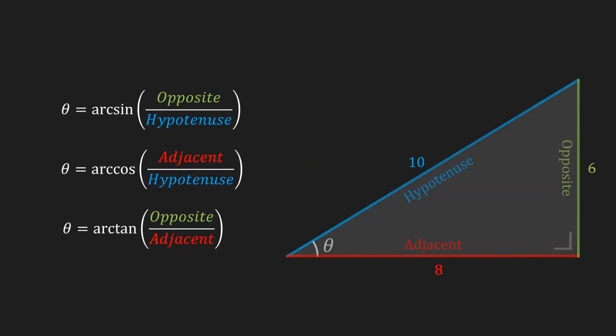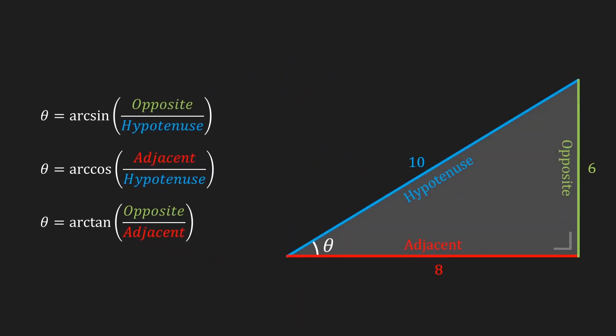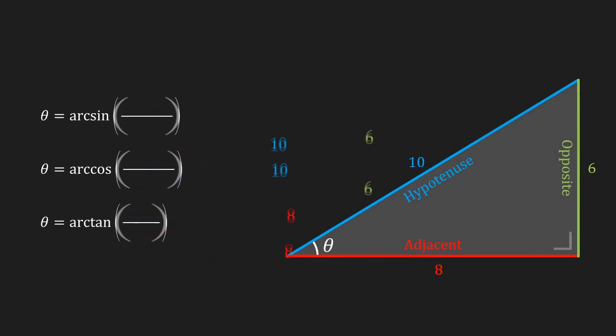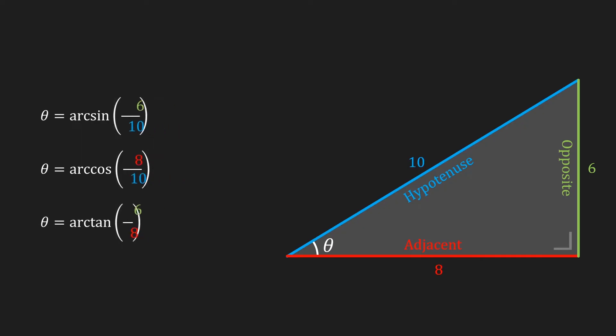Let's once again take our triangle, fill in the lengths of its sides in our formula, and now we have to take a calculator to calculate the arcsine of 6 divided by 10, the arccosine of 8 divided by 10, and the arctangent of 6 divided by 8.